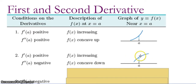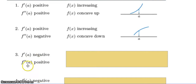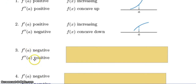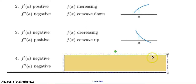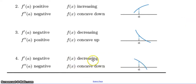Here's an example of what that might look like near A. How about if the first derivative is negative, but the second derivative is positive at A? If the first derivative is negative, the function is decreasing. If the second derivative is positive, the function is concave up. And the last scenario: if both the first and second derivative are negative, then the function is decreasing and concave down.